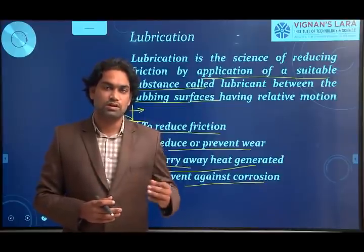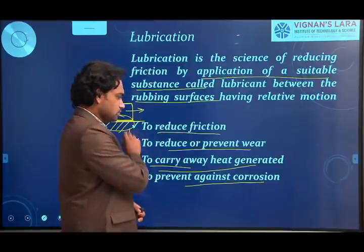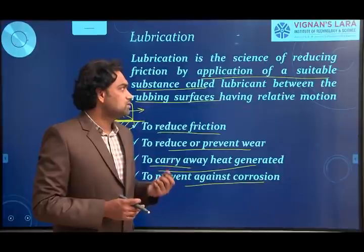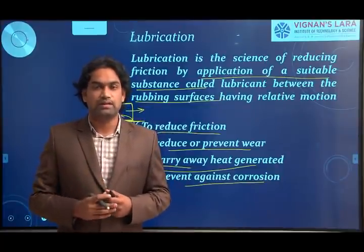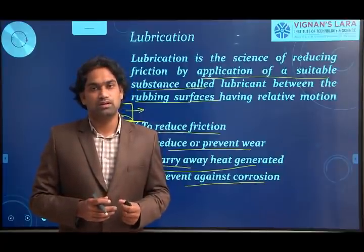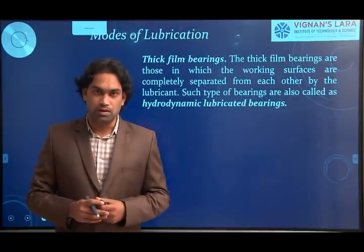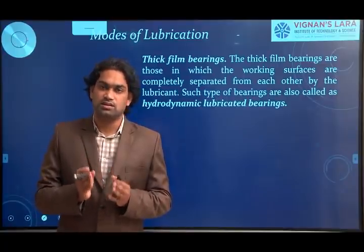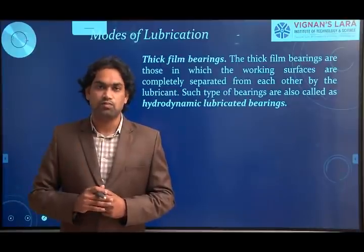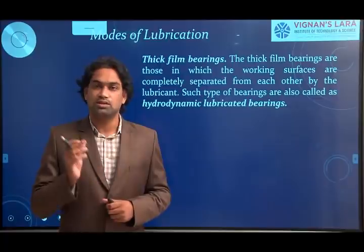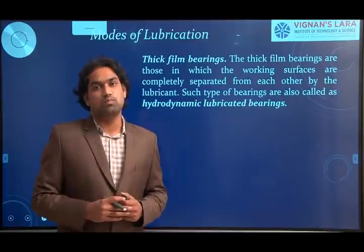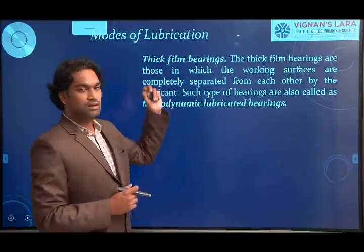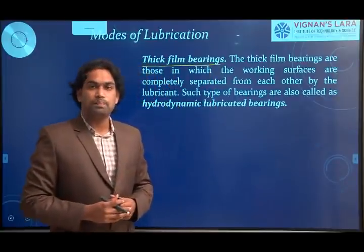Lubrication is very much essential in bearings between the two metallic parts. In sliding contact bearings, lubrication can be classified into different modes — we call them modes of lubrication. The first type is thick film lubrication. Journal bearings, which are plain bearings supporting radial-type loads, can also be classified based upon the type of lubrication mode. Bearings that operate using thick film lubrication are called thick film bearings.